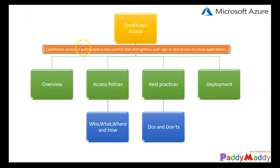Conditional access allows you to implement automated access control decisions for accessing your cloud apps based on conditions you set up. You need to remember that users still use their username and password to log in, because conditional access is not the first factor authentication method. It applies after entering the username and password, setting additional conditions to grant access.